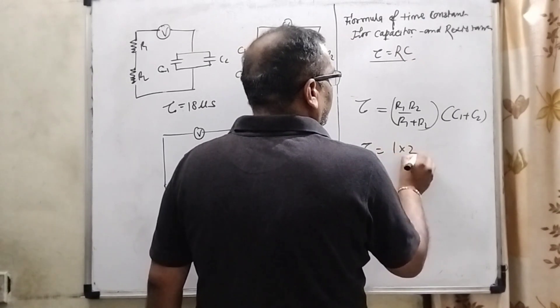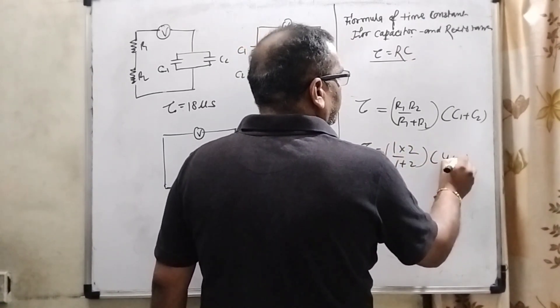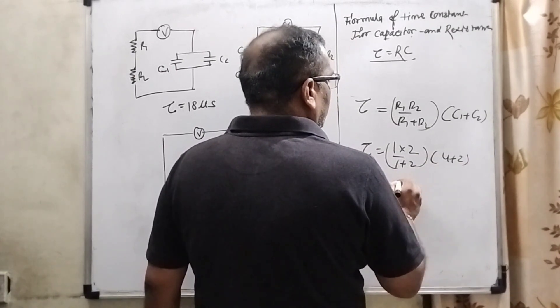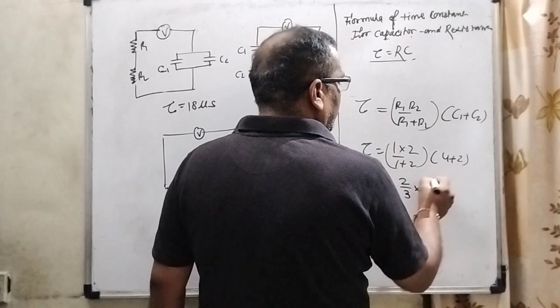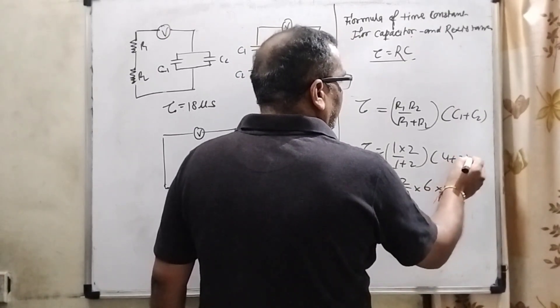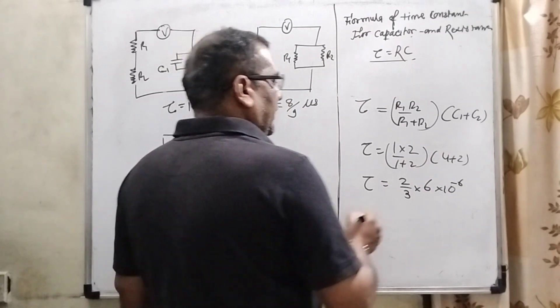Now substitute the value, 1 into 2, 1 plus 2, and here 4 plus 2. Tau equal to 2 divided by 3, and 4 into 6. Convert to farad, multiply by 10 to the power minus 6.